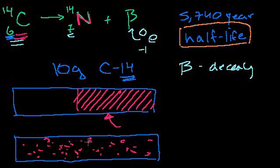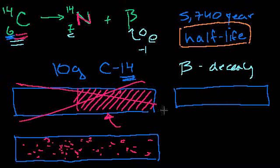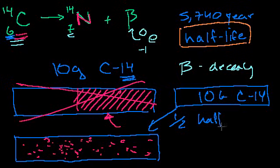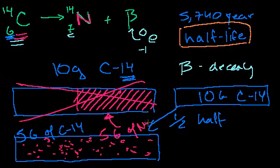What happens over that 5,740 years is that, probabilistically, some of these guys just start turning into nitrogen, randomly, at random points. And over 5,740 years, you determine that there's a 50% chance that any one of these carbon atoms will turn into a nitrogen atom. So after 5,740 years, half of the atoms will now be nitrogen. So now you have 5 grams of C-14 and 5 grams of nitrogen-14.